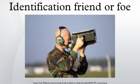Friend or foe is an identification system designed for command and control. It enables military and national interrogation systems to identify aircraft, vehicles or forces as friendly and to determine their bearing and range from the interrogator. IFF may be used by both military and civilian aircraft.